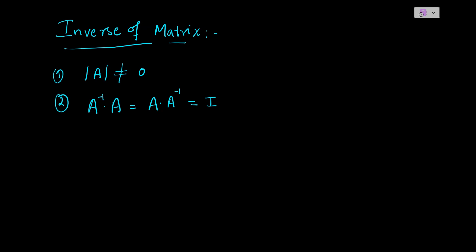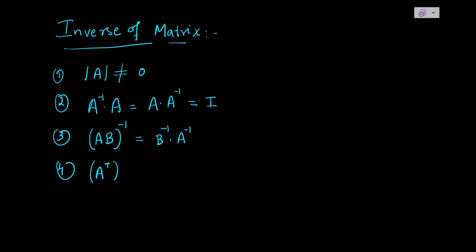The third point is: (AB) inverse equals B inverse times A inverse. The fourth point is: the transpose of A whole inverse equals A inverse whole transpose, written as (Aᵀ)⁻¹ = (A⁻¹)ᵀ.